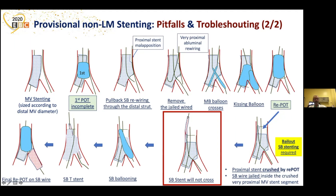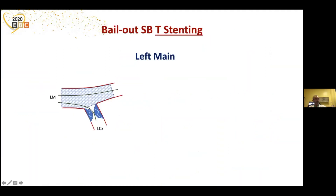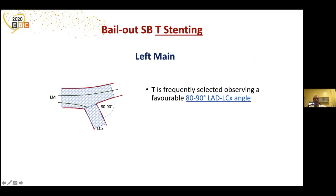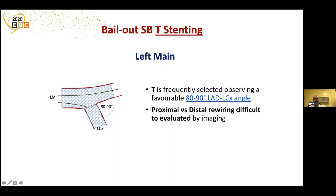For left main, it's a different animal. Two examples in this case. The angle is favorable — favorable to do T-stenting. T is frequently selected observing the favorable 80 to 90 degree LCX-LAD angle. In addition, there is another pitfall: the proximal versus distal rewire is difficult to evaluate by imaging in the left main, so you don't know if you are distal or proximal.